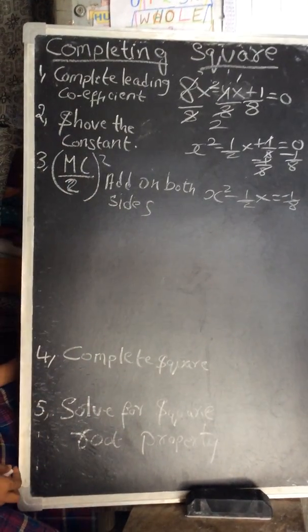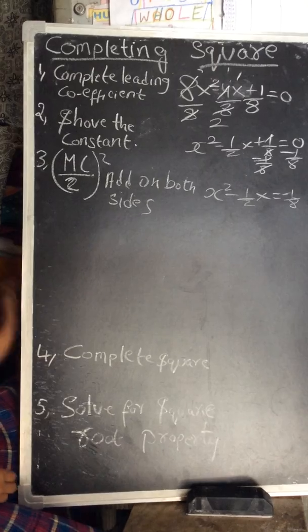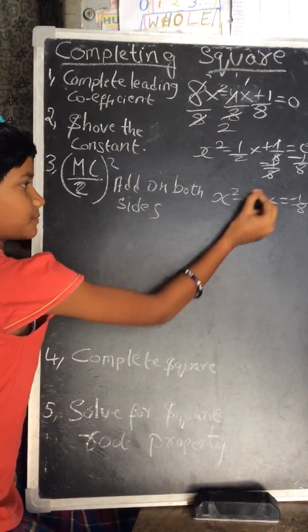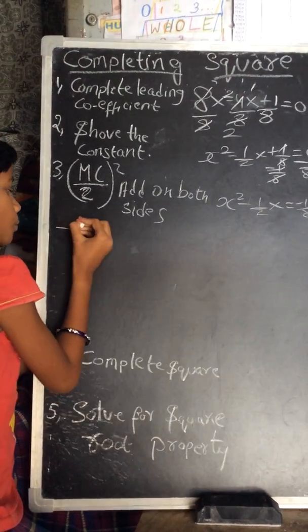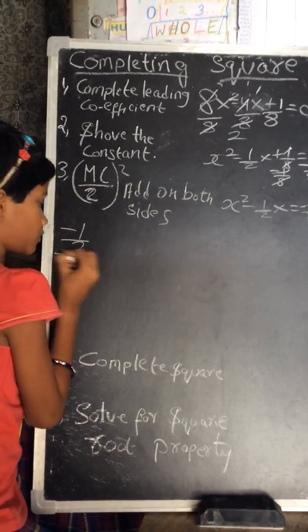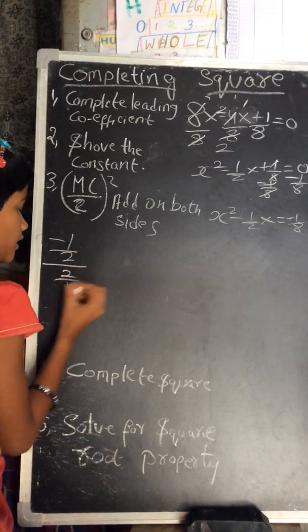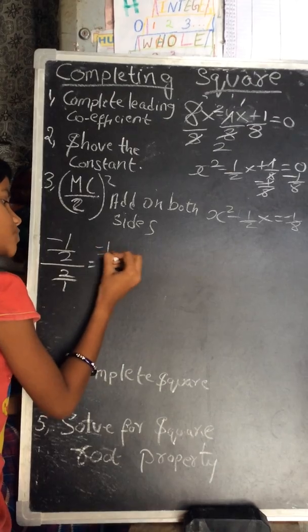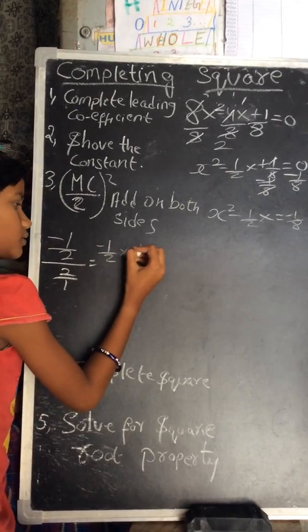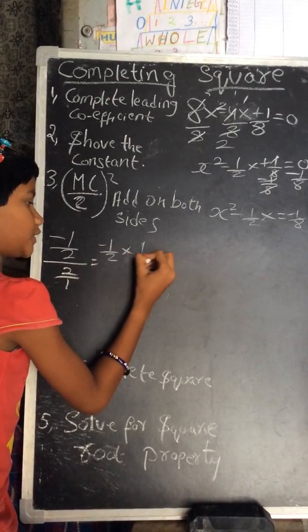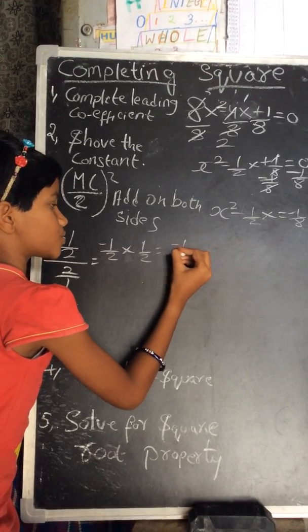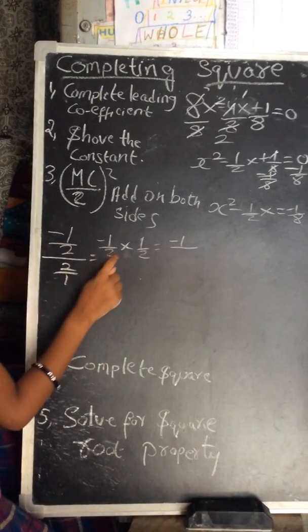MC by 2 square - add on both sides. So we take this middle coefficient minus 1 by 2, divide by 2. That equals minus 1 by 2 times 1 by 2, which equals minus 1 by 4.